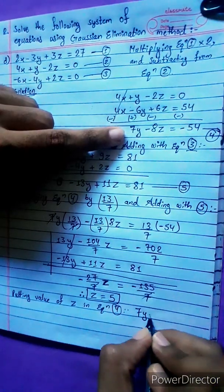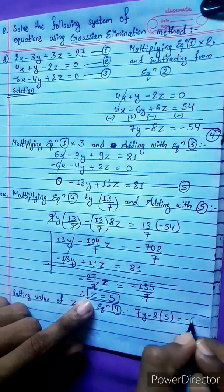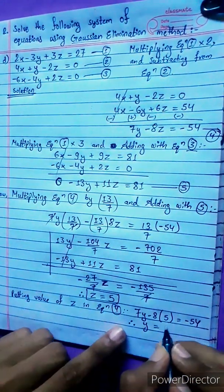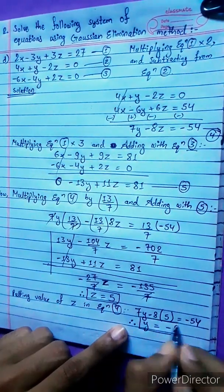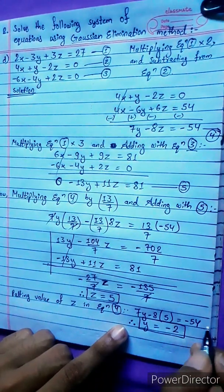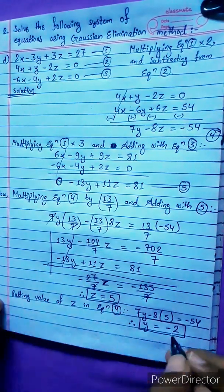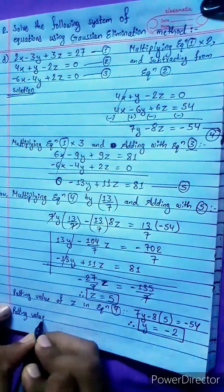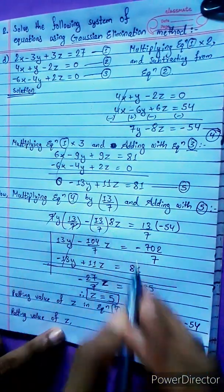Putting the value of z into equation 4: 7y minus 8 times 5 equals minus 54. Solving directly, 8 times 5 is 40, so 7y equals minus 54 plus 40 equals minus 14, therefore y equals minus 2.